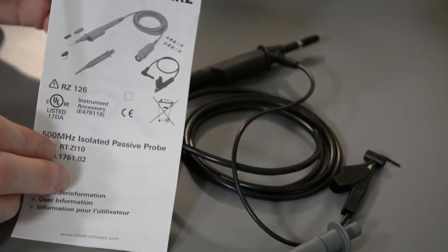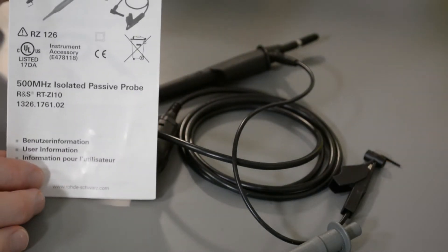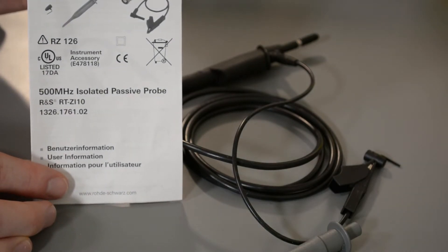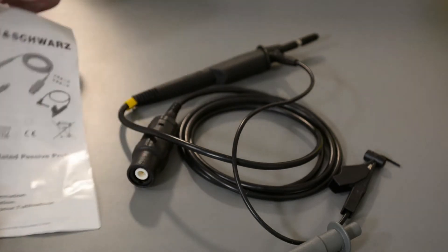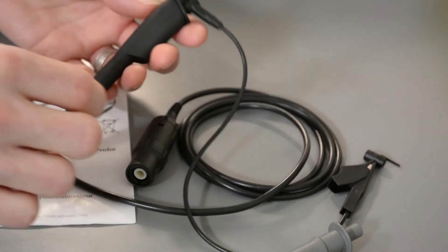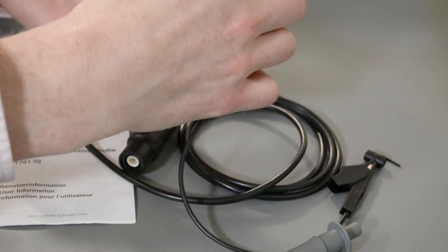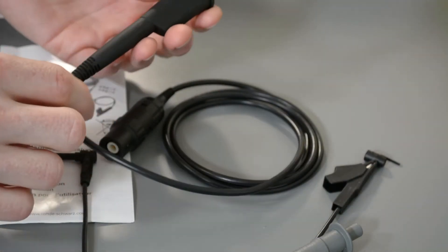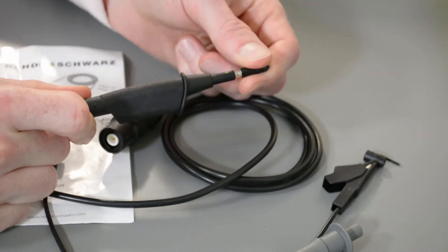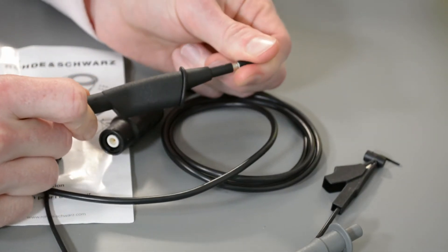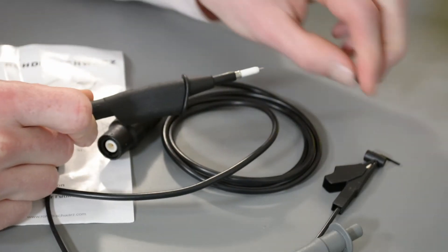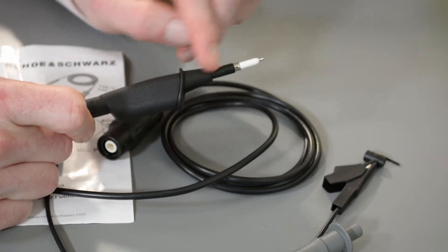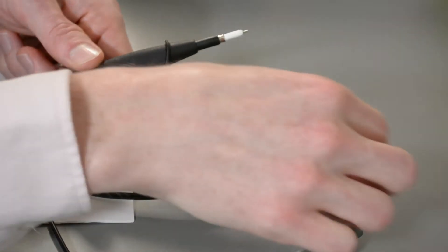So, the scope probes I got with it are these 500 MHz isolated passive probes, part number RTZ-I10. And these are rated at 700 or 1,000 volts, 10x probes. They have this little protective cap, and you can pull off here, and you can see there's a large space here between the tip and the ground, and it's got a lot of protective isolation.